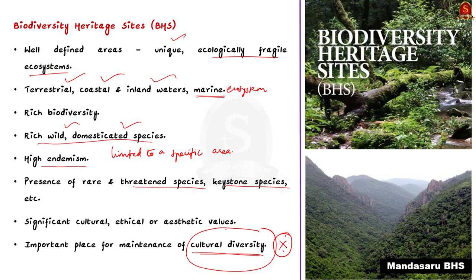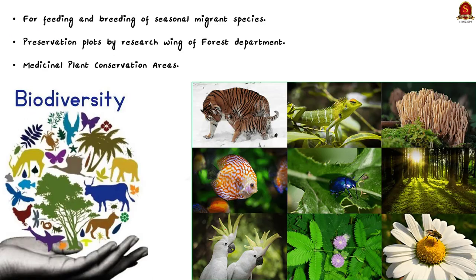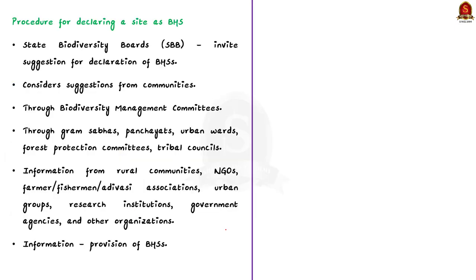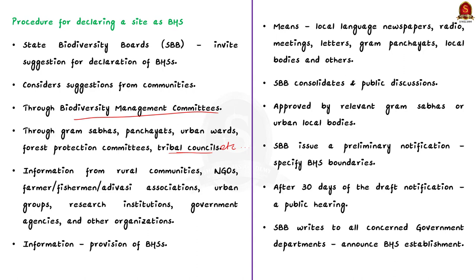The criteria for the identification of biodiversity heritage sites are displayed on screen. Regarding who can declare a biodiversity heritage site: the state biodiversity boards may invite suggestions for declaration of such sites, considering suggestions from local communities through a biodiversity management committee, Gram Sabhas, Panchayats, Urban Wards, Forest Protection Committees, Tribal Councils, etc. After serious scrutiny, the state biodiversity board issues a preliminary notification specifying the boundaries of the site. After 30 days, there will be a public hearing, after which the establishment of the biodiversity heritage site is finally announced.